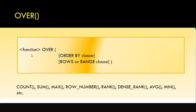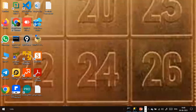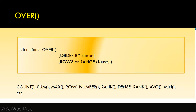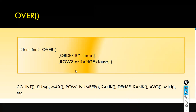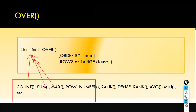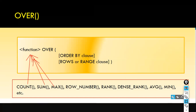Inside the OVER clause you can use ORDER BY with a column name — whichever column you want to order by — and you can also use ROWS or RANGE clauses. The function itself can be COUNT, SUM, MAX, ROW_NUMBER, or anything else. You can operate these aggregate functions in conjunction with the OVER function. The OVER clause is used in conjunction with analytical functions in SQL Server to perform calculations on a specific set of rows within a result set.